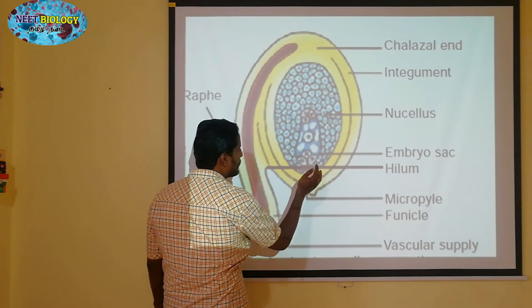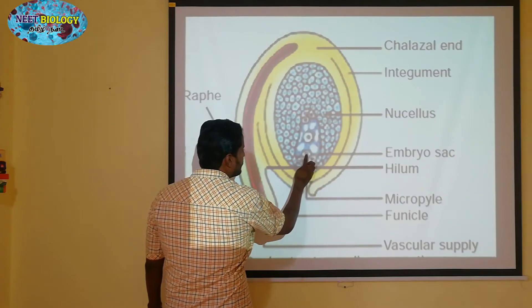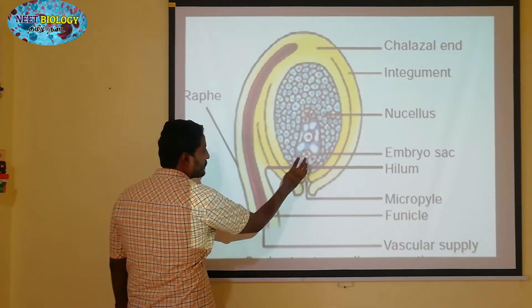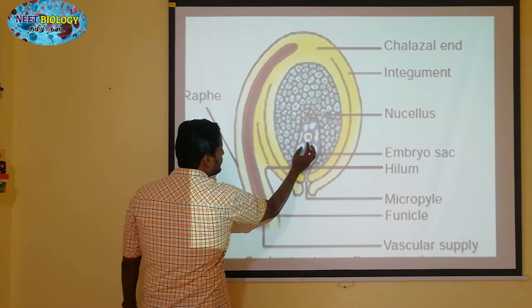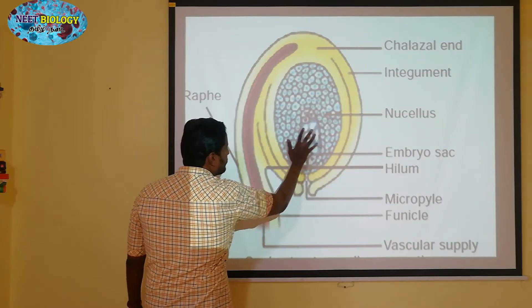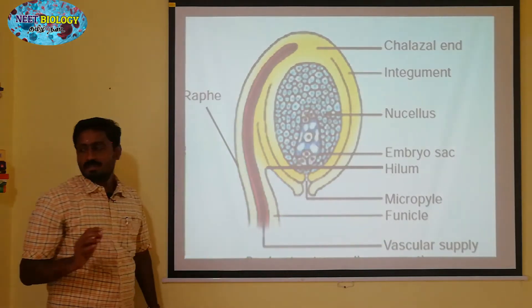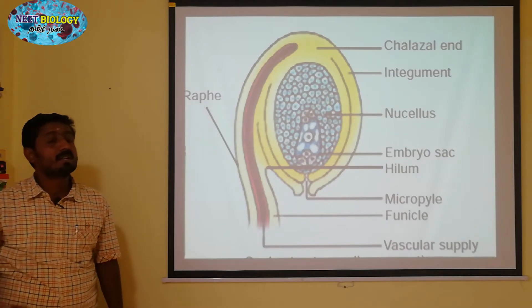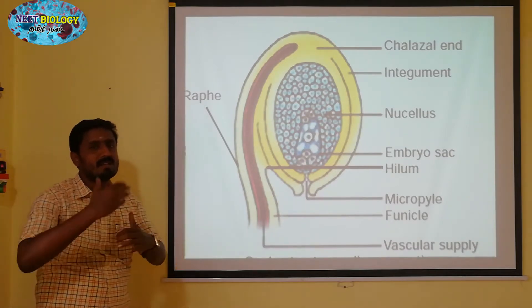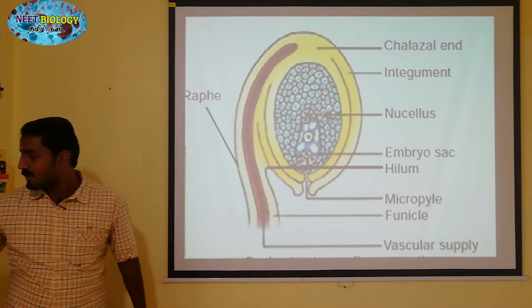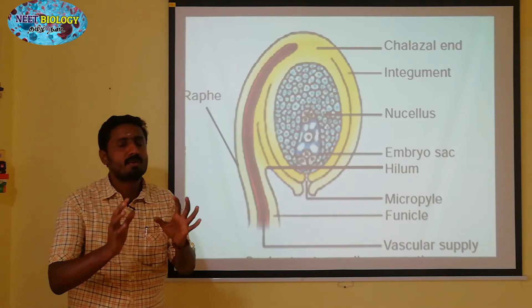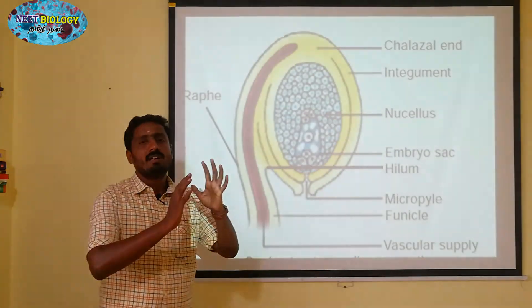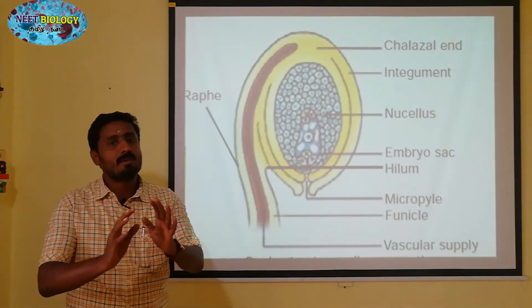The endosperm is tripled. The endosperm is the nutritive tissue which will provide nutrition for the growing embryo.